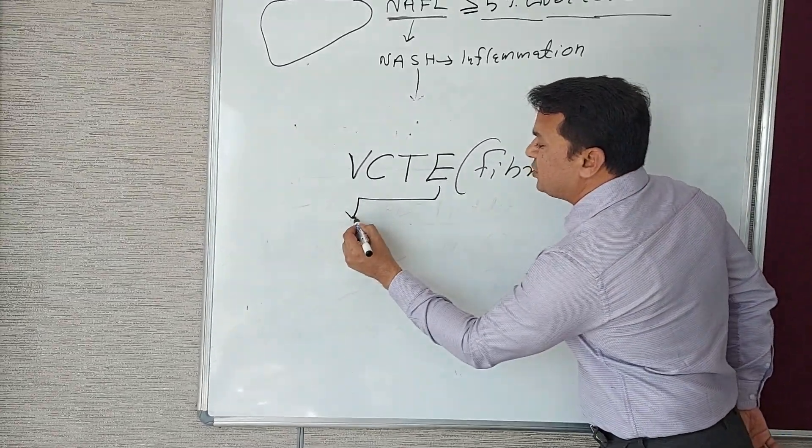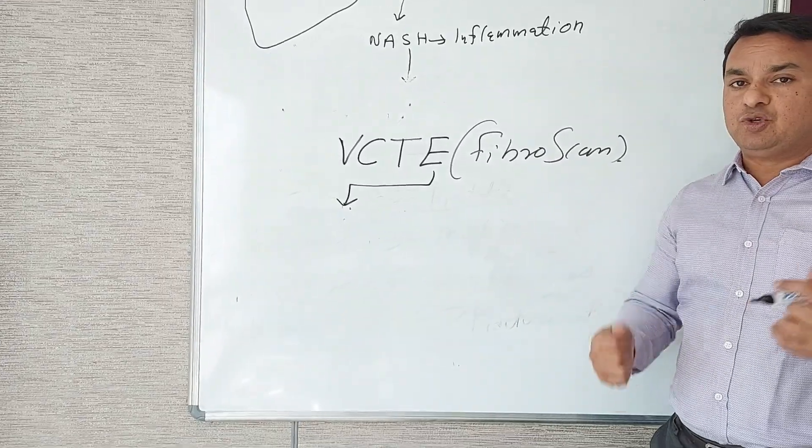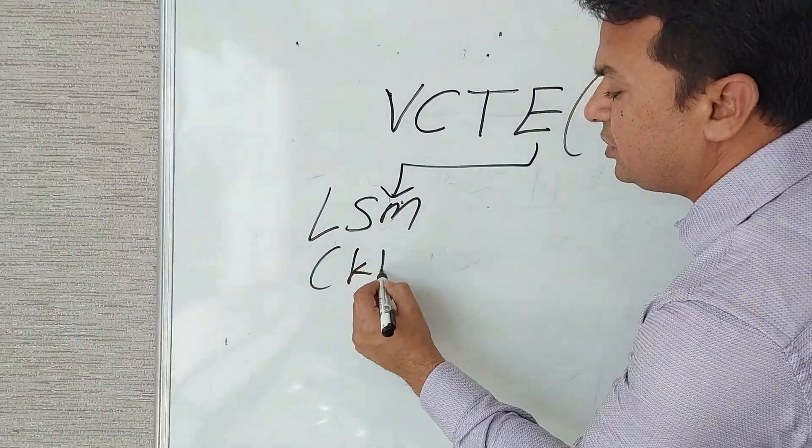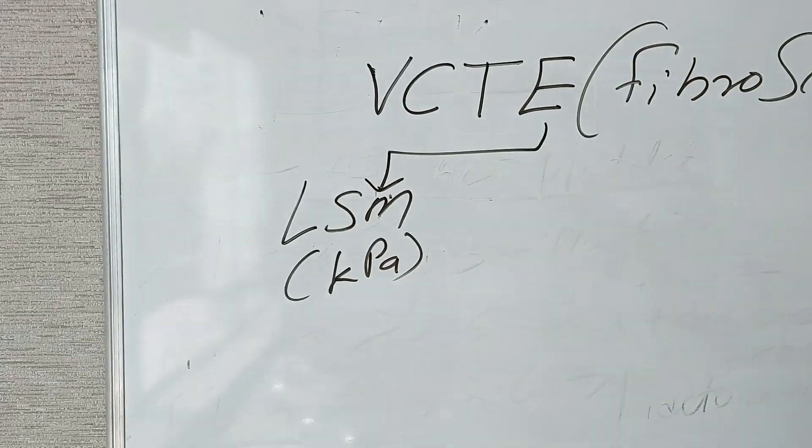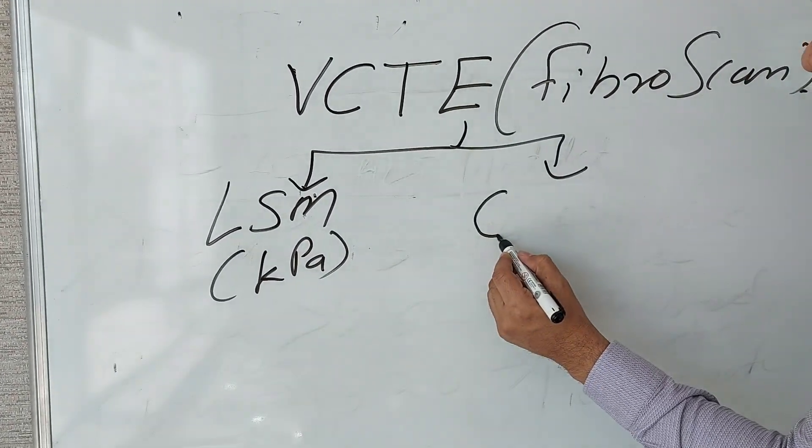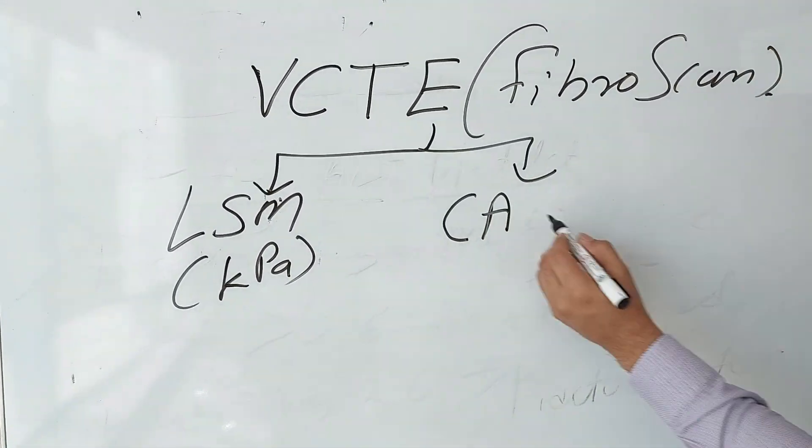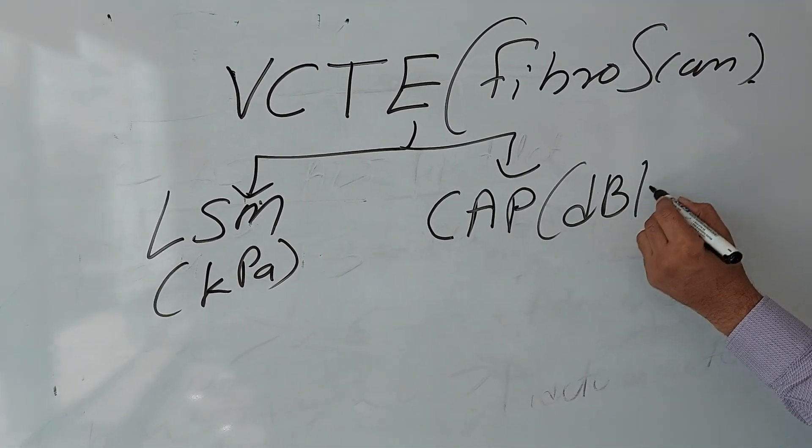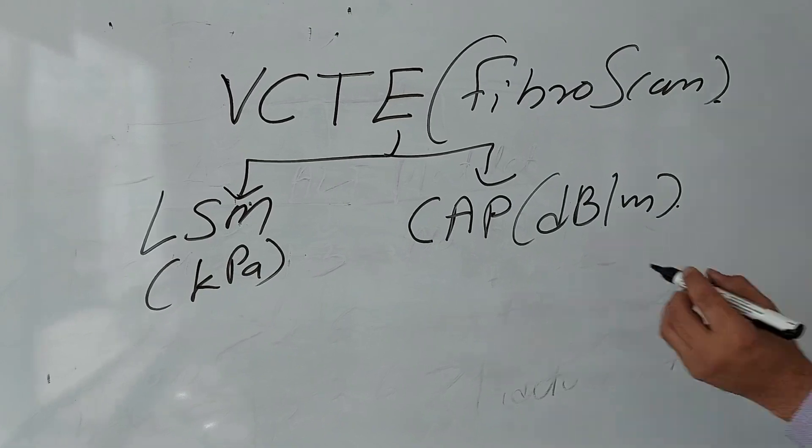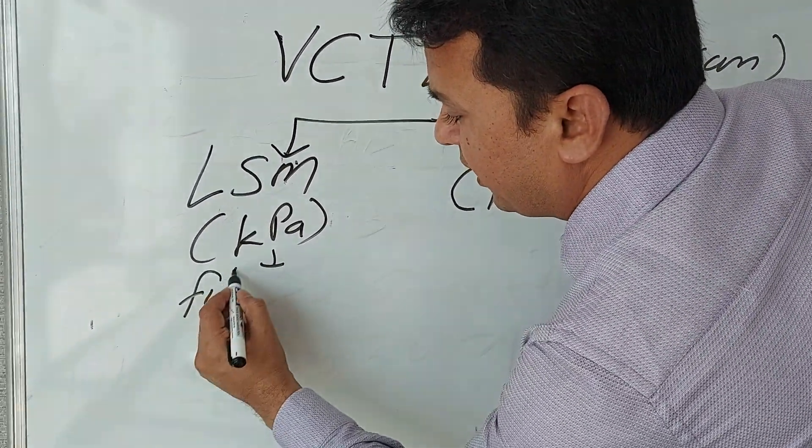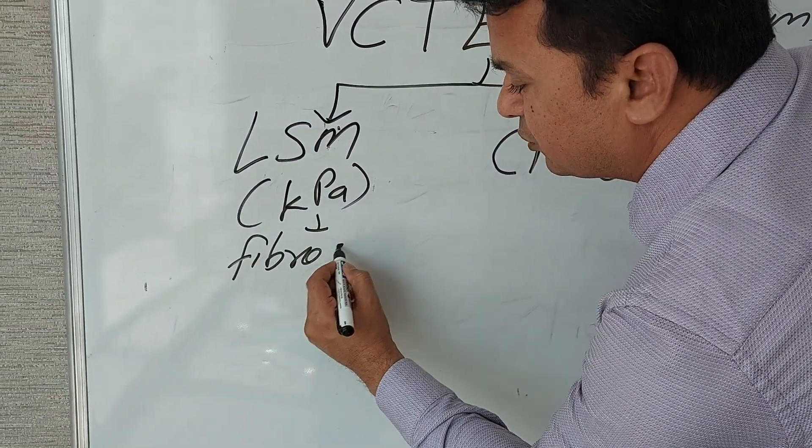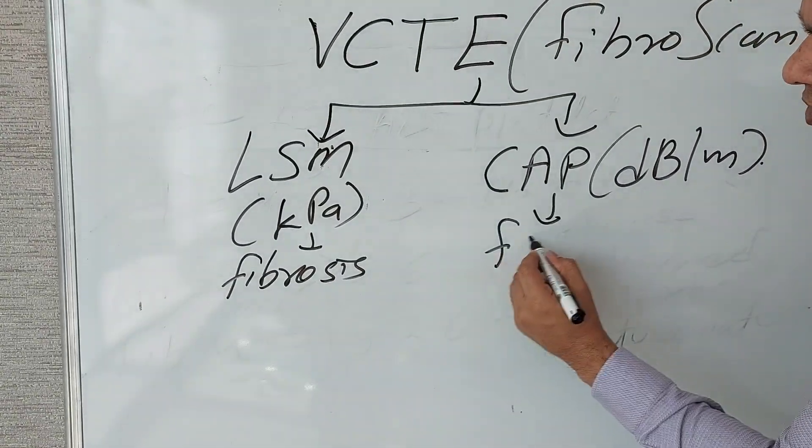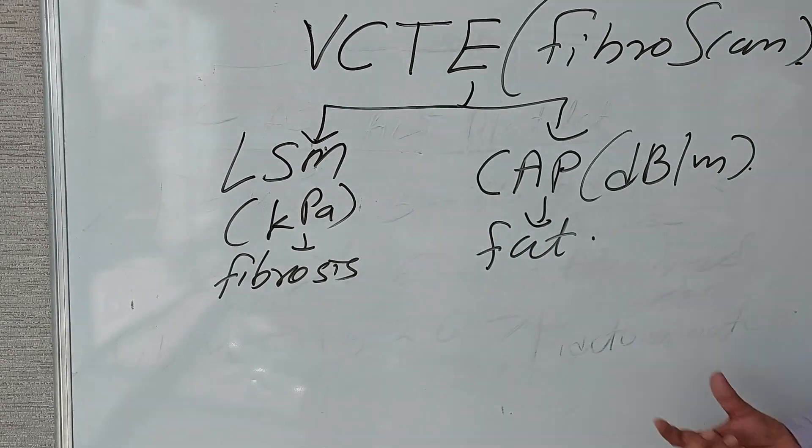When you ask the patient to undergo transient elastography, it gives you two values: liver stiffness measure (LSM) in kilopascals, and controlled attenuation parameter (CAP) in decibels per meter. LSM gives you the grading of fibrosis—that means how much stiffness is in the liver—and CAP gives you how much fat is deposited